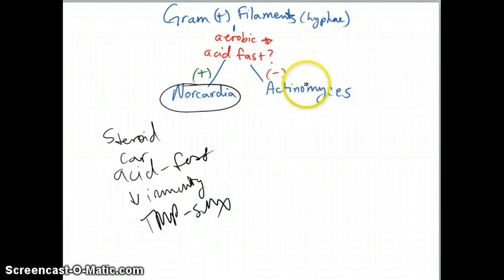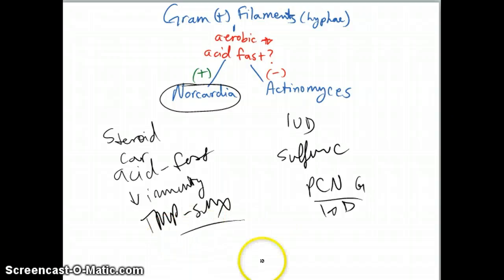Over here at Actinomyces, that one is going to be acid-fast negative, non-aerobic. You find it in your mouth. The main things you're going to hear about this one is someone had dental surgery, also IUDs in women. This one is going to appear as sulfur granules microscopically. It usually has neutrophils surrounding it. You're going to treat it with penicillin. Since it is sulfuric, you're not going to treat it with sulfur - treat it with penicillin first. This one you can treat with the sulfa. And that will complete our gram-positive bacilli. Thank you.